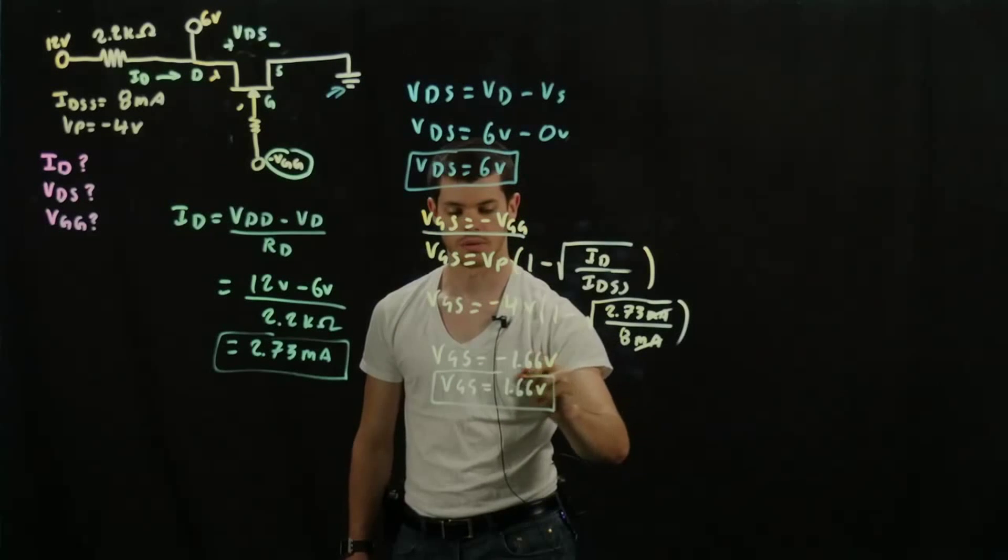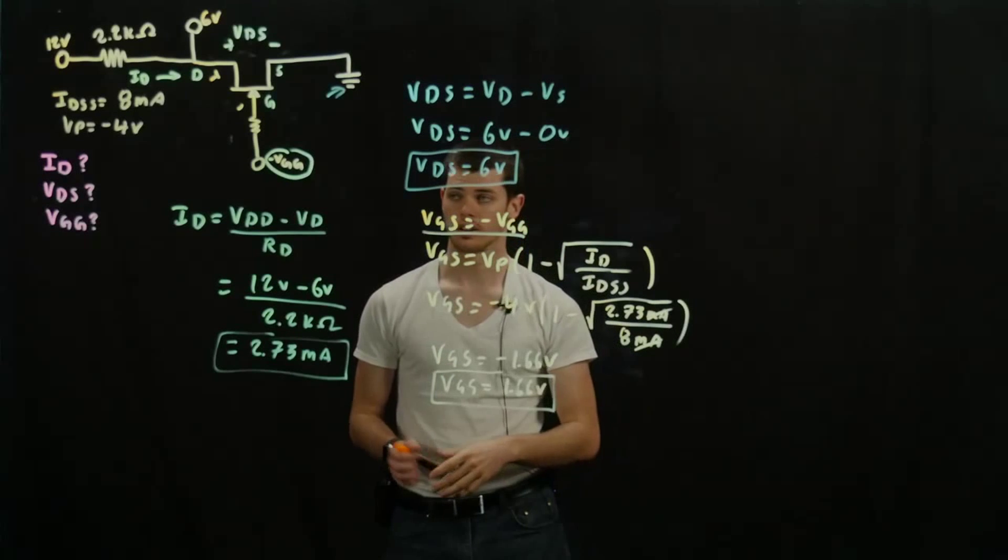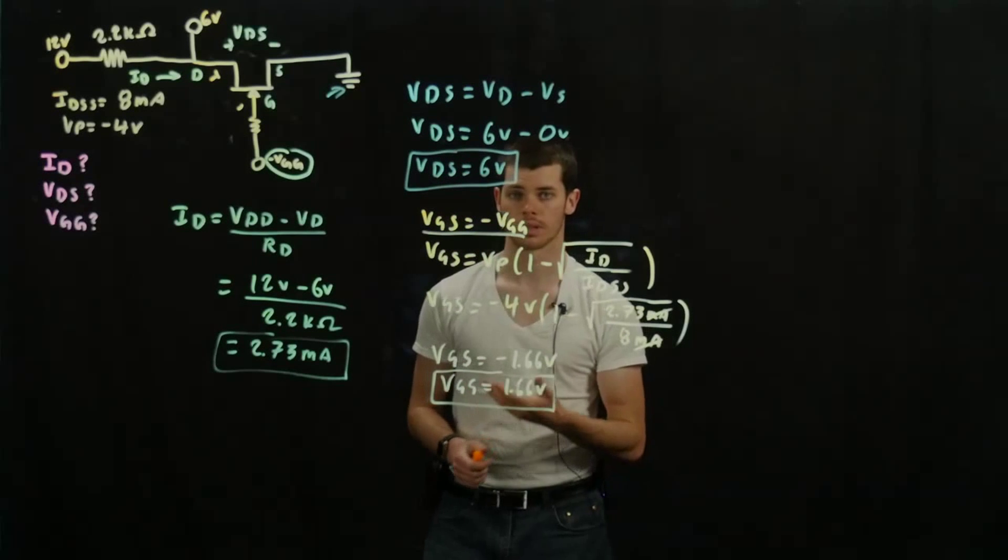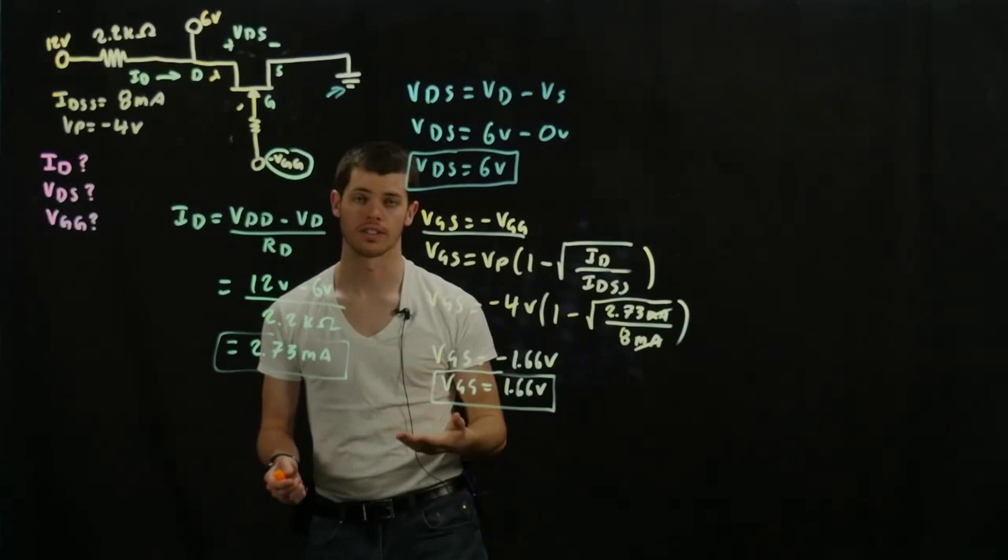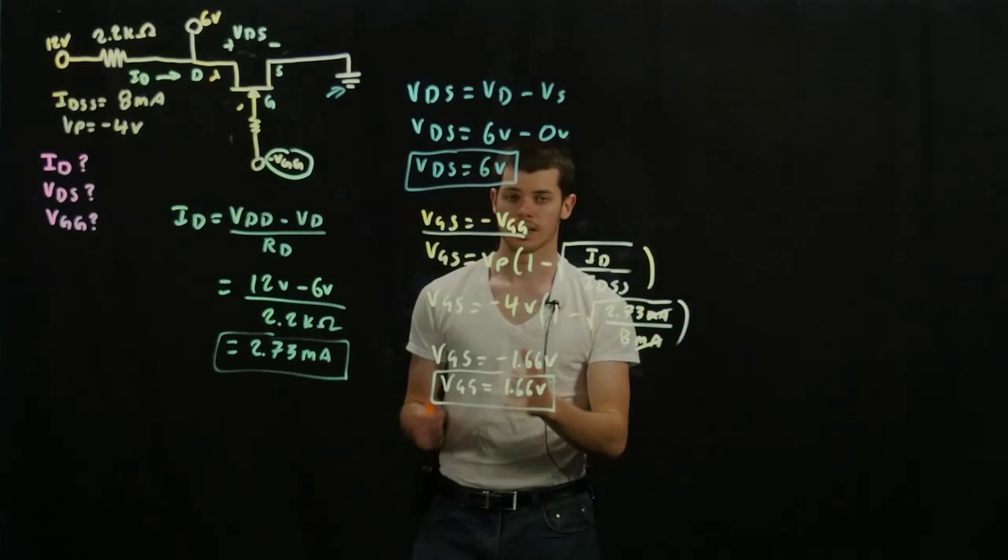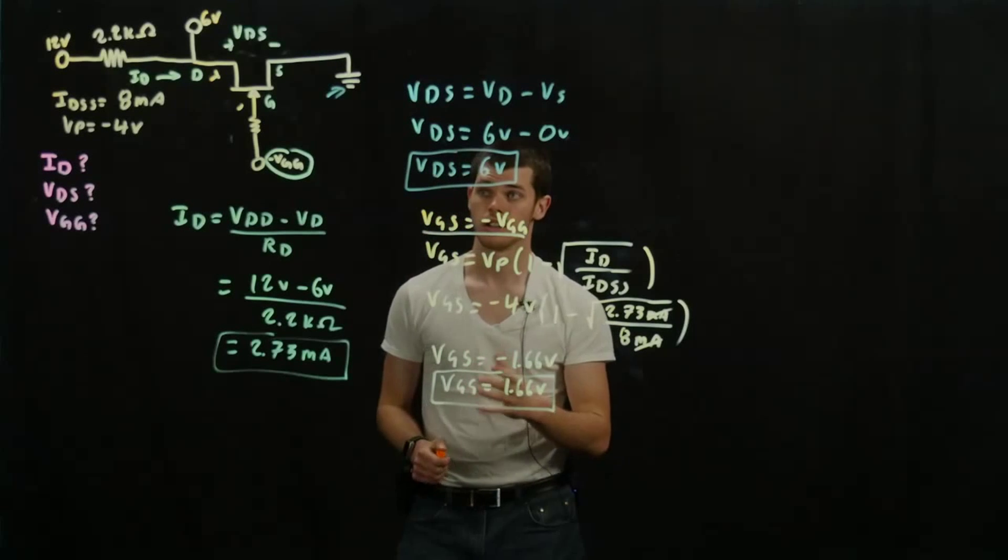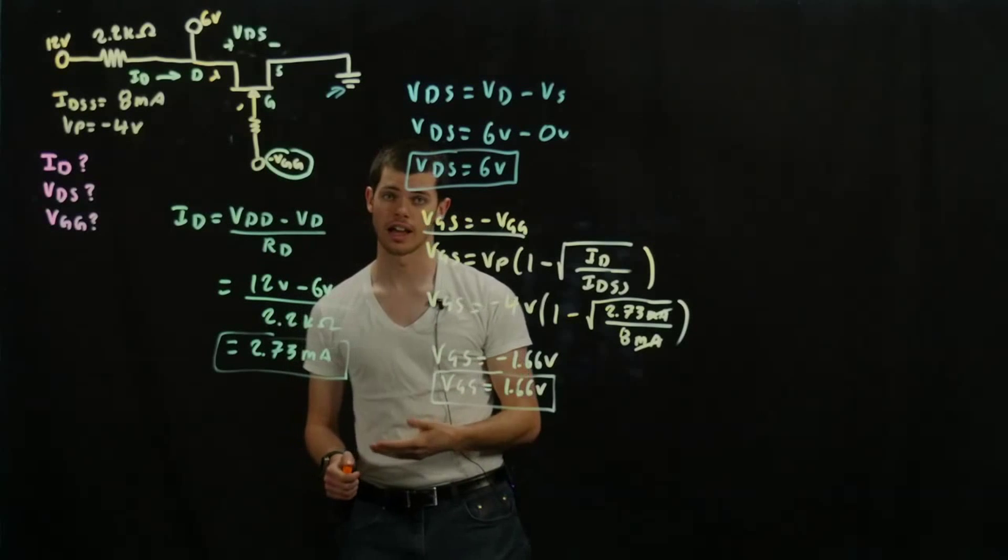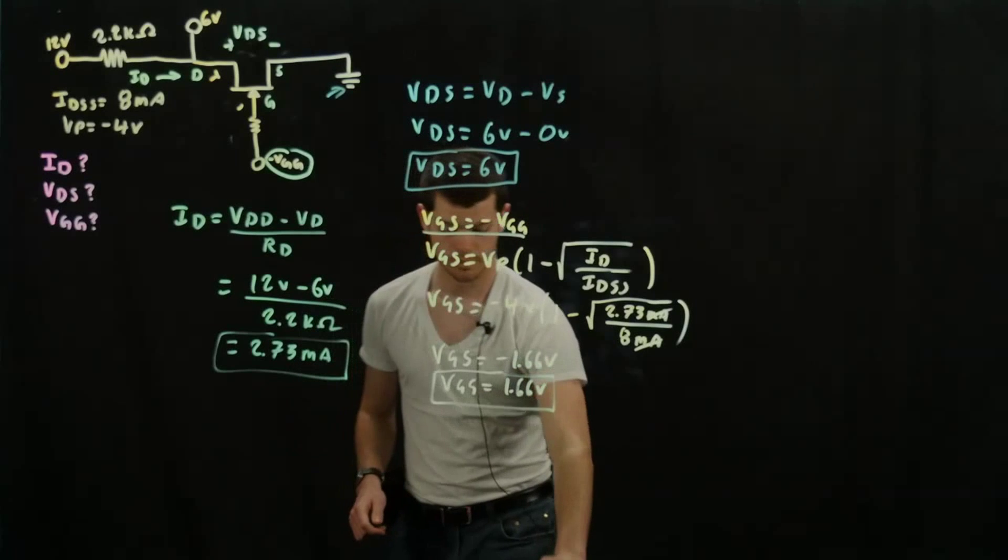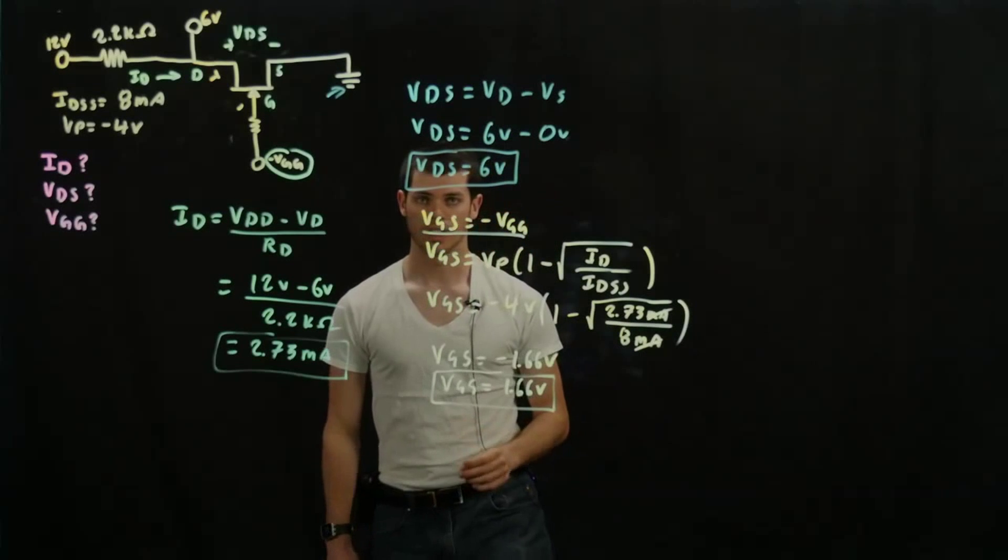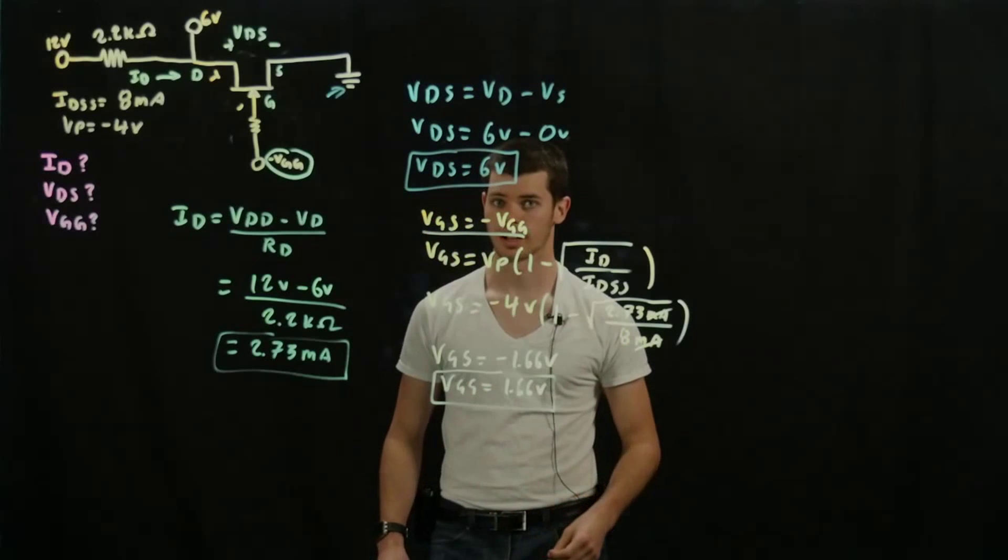That's the last value that we found. And problems might not ask you specifically to solve for these explicit values. There might be something else related, like say, let's say there was a component here that said find VGS. Based on these basic methods that we've used, you can find these important voltages. And from there, you can essentially find any particular thing that they ask for when solving for the circuit. So if you need any other help with anything else related circuits too, or anything electrical related, be sure to stop by our YouTube channel and take a look.